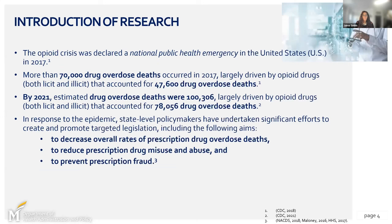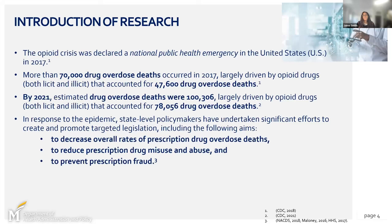We're all aware of the opioid crisis — it was declared a national public health emergency in 2017 here in the US. Several levers were pulled throughout this time to address the epidemic. Between 2017 and 2018, we saw a precipitous decline in drug overdose deaths, showing that some of the legislative and on-the-ground work was coming to fruition and making a positive impact, decreasing drug overdose deaths largely driven by opioid drugs, both licit and illicit.